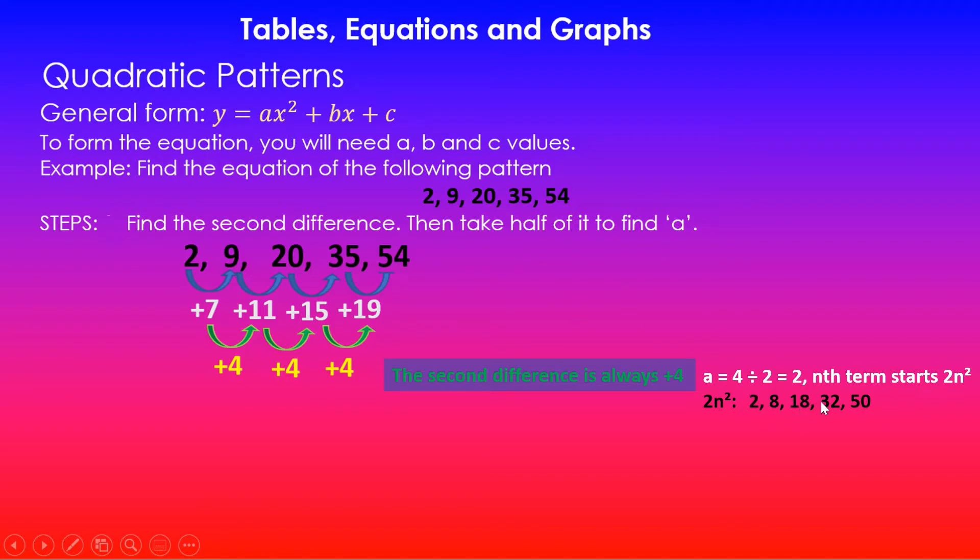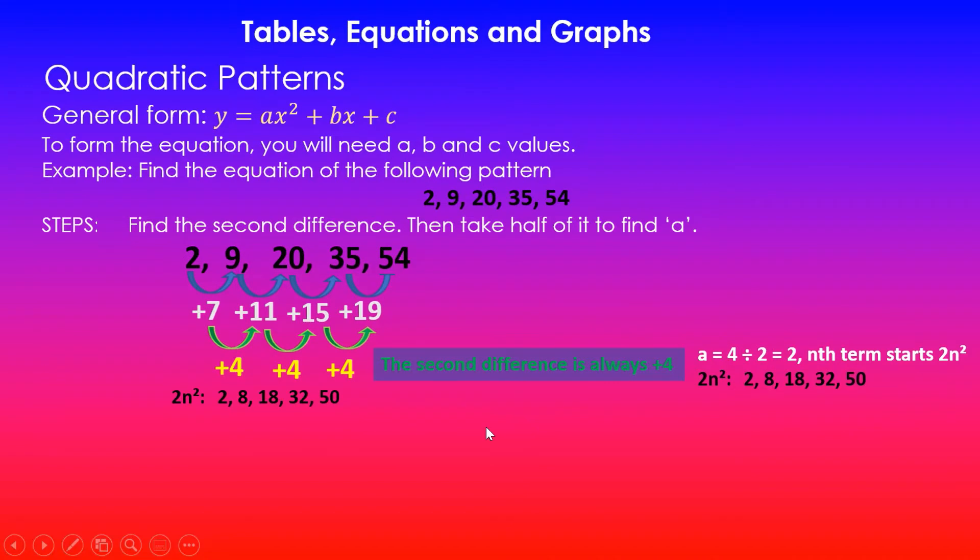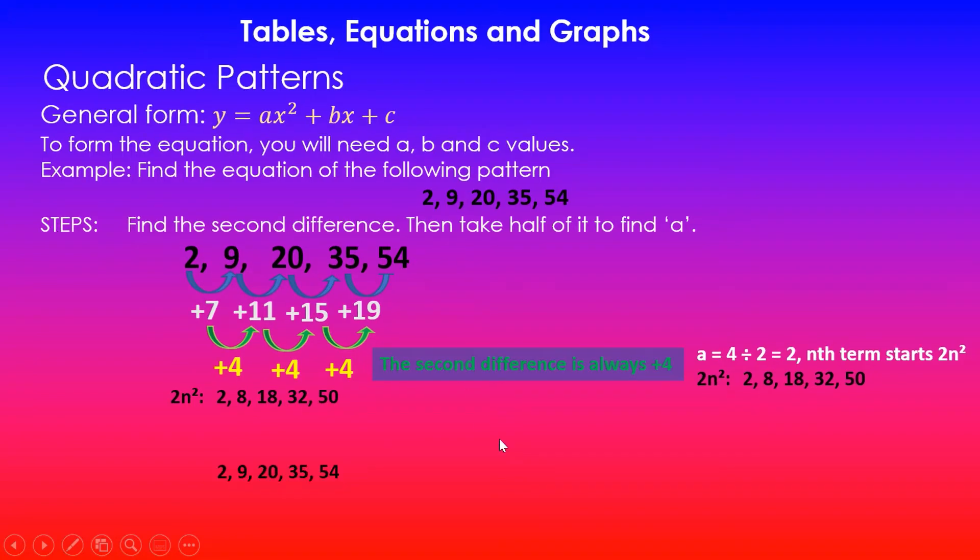So that's the term we have got here. The sequence for that is 2, 8, 18, 32 and so forth. It's not what we were asked to find. So what we need to then look for is the b and c values. It could have a linear pattern to it. I've got the 2n squared here. Then I'll bring the pattern down, the one that we are asked to find the equation for. So we'll compare these now. 2 stayed 2, but 8 became 9, 18 became 20. Likewise, 32 is 35 and 50 became 54.